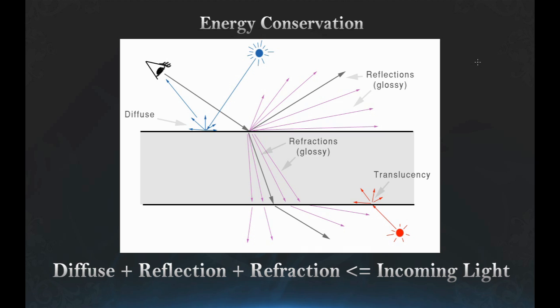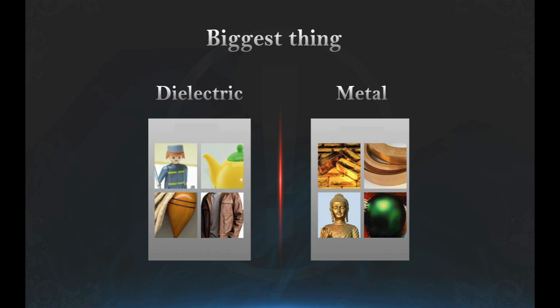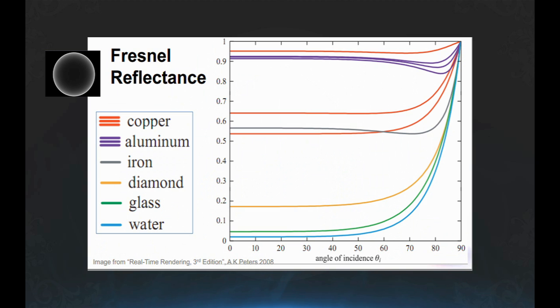Your diffuse plus reflection plus refraction cannot exceed the amount of incoming light that your lighting environment provides. Also make sure that your engine operates in linear space, so your texture pixels actually represent the amount of energy that the surface transmits. The biggest difference we have is between dielectrics and metals, because they have different optical properties.